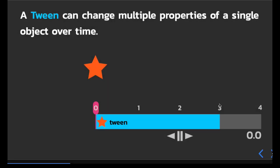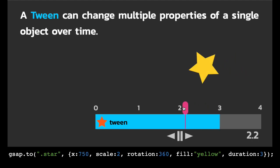Here I want to show you that a tween can change multiple properties of a single object over time. In this tween here, we're changing the scale, the rotation, and also the fill color. So we've got quite a few different properties in that vars object.